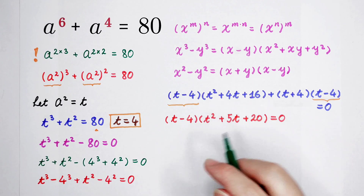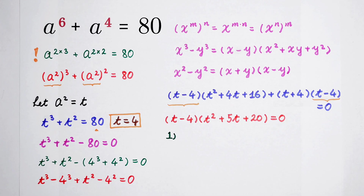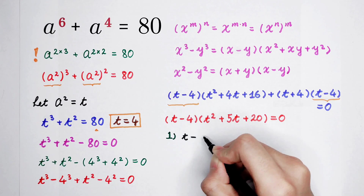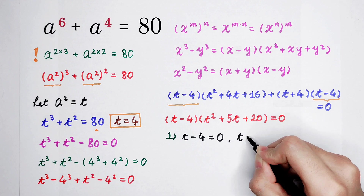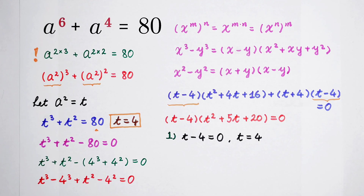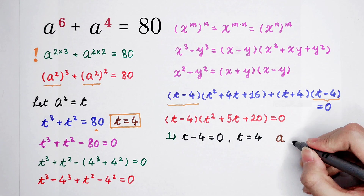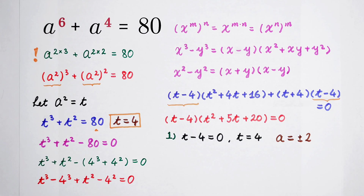Something times something equals 0, so we have two cases. First case: when t minus 4 equals 0, then t equals 4. Since h squared equals t, h squared equals 4. Note that (minus 2) squared is also 4, so h has two solutions: h equals positive or negative 2. First case done.